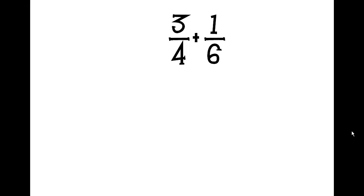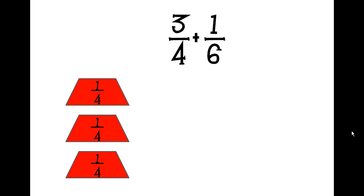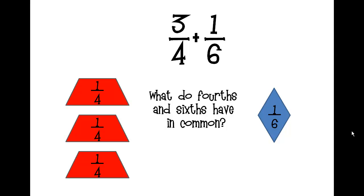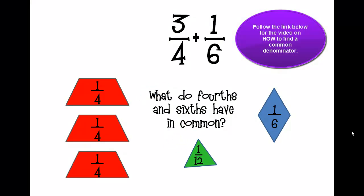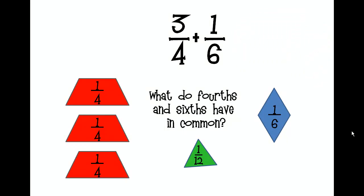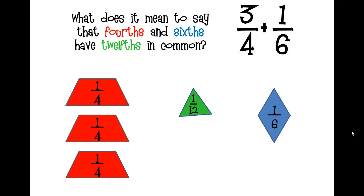Here we have the fraction again: three-fourths plus one-sixth. Let's take a look at it with the pattern blocks. Three-fourths looks like this, plus one-sixth looks like this. We have to figure out what label our answer would have — what do fourths and sixths have in common? I'll go ahead and tell you that what they have in common is twelfths. We'll see why, and there's another video that will explain how you figure it out when you're just dealing with numbers.